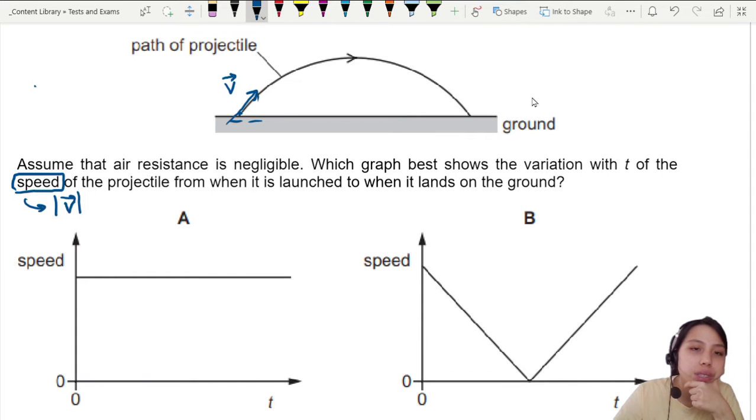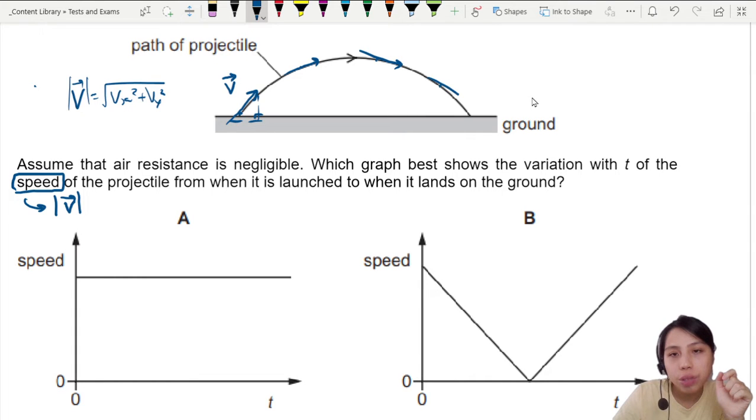Velocity has horizontal and vertical components. They're all related by Pythagoras theorem. So velocity, I'm gonna find the magnitude, this will be vx squared plus vy squared. So now when you think of the actual speed, these blue arrows that I'm drawing, these are the speed at each point.